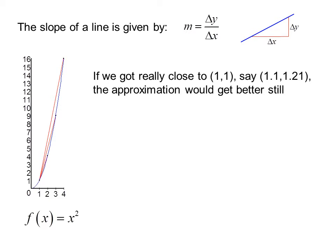If we got really close to (1,1), say (1.1, 1.21), the approximation would get better still. Delta y over delta x equals (1.21 minus 1) over (1.1 minus 1), which is 0.21 over 0.1, or 2.1.